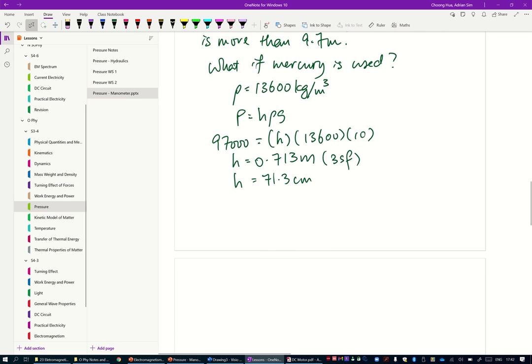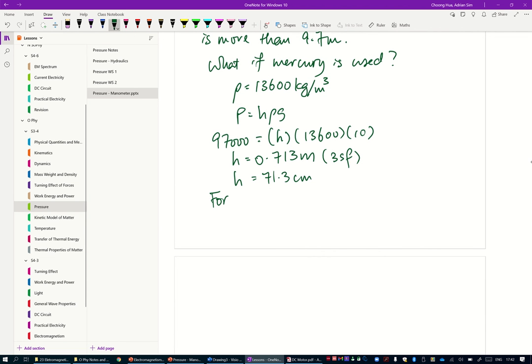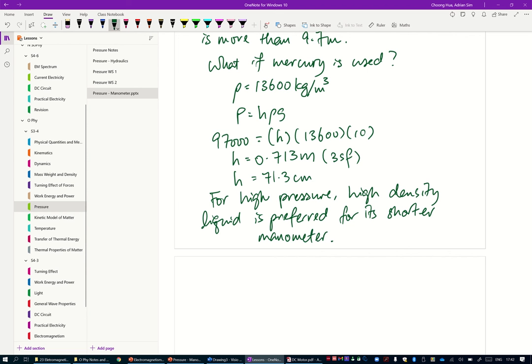For high pressure, high density liquid is preferred for its shorter manometer. You don't need such a tall manometer.